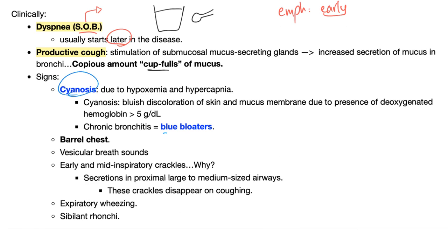Signs: cyanosis. That's why we call them blue bloaters — blue because of cyanosis, bloaters because they tend to be obese from air trapping. They are trapping air inside because they cannot get the air out — that's the definition of obstructive lung disease.